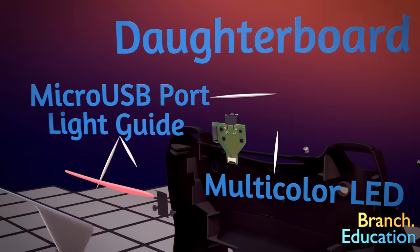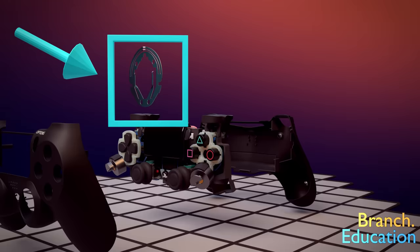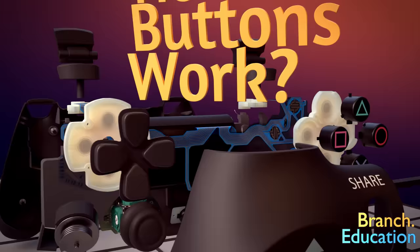That's pretty much it for the components. Have you figured out where the metal disc is located? If you haven't, here's a hint: there are four of them in every controller. Let's move on and see how the buttons work.